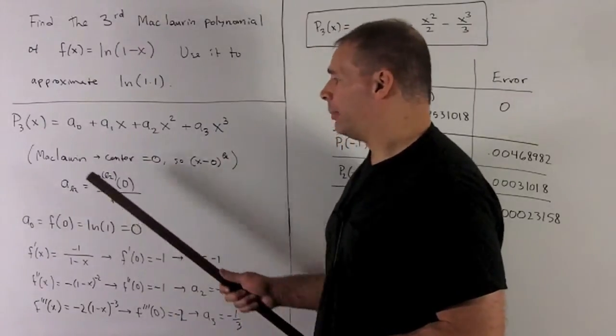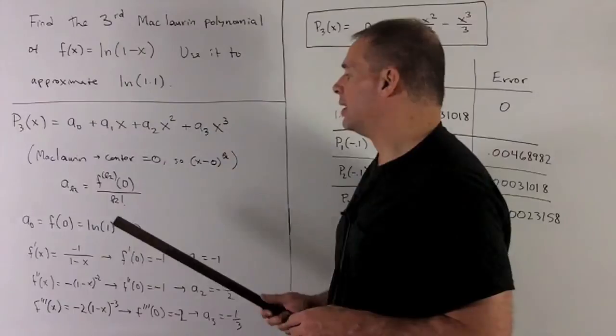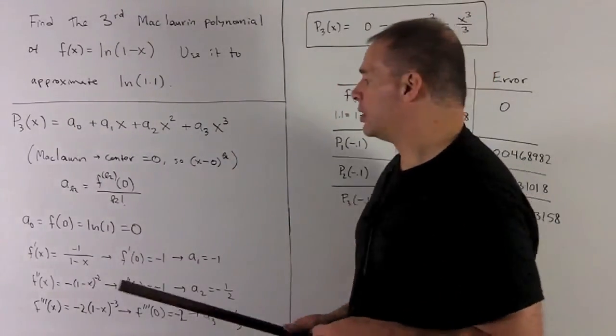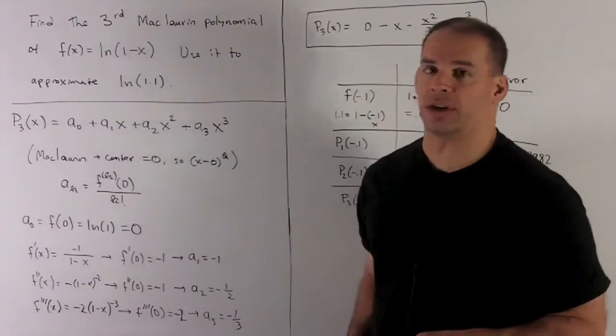a_0. Well, a_0 is the zeroth derivative, which is just the function itself, divided by 0 factorial, which is by definition 1. So we're just going to evaluate our function at 0. So that's natural log of 1, which gives me 0.